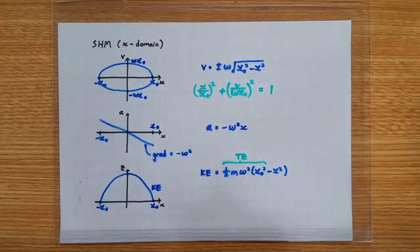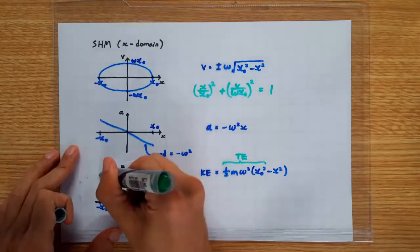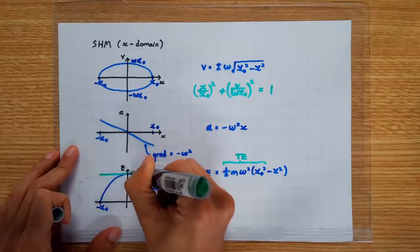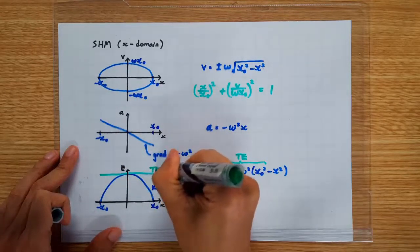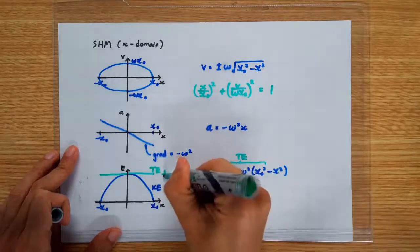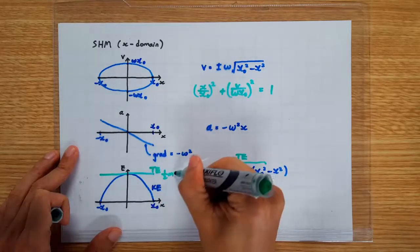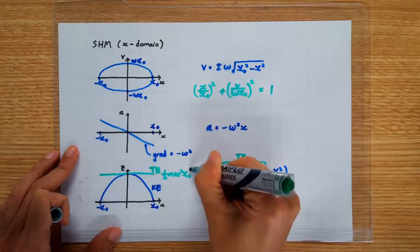which equals to the total energy of the oscillation. So the total energy is again a horizontal line because it's a constant. And we know that it's actually equals to half m omega square x0 square.